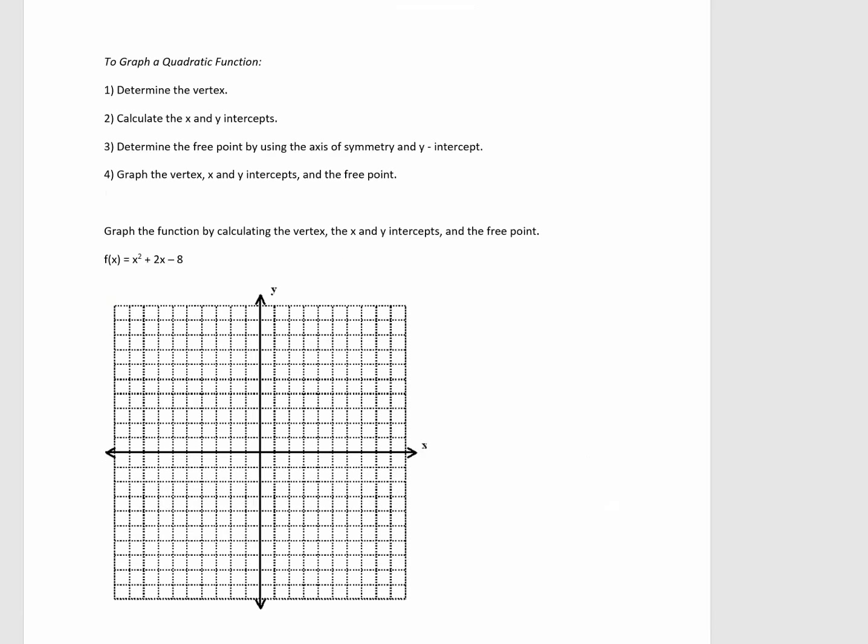So, now I want to start graphing quadratic functions. One way I could do this is to determine the vertex, then calculate the intercepts, then determine the free point by using the axis of symmetry and the y-intercept, and then graphing all of those points on the coordinate plane. So, let's graph the function by calculating the vertex, the intercepts and the free point.